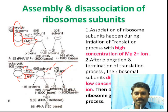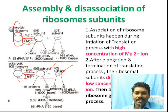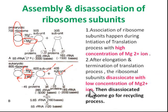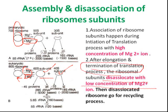Low concentration of Mg2+ leads to dissociation. When protein synthesis reaches termination, the ribosomes dissociate with low concentration of Mg2+. After elongation and termination of the translation process, after dissociation, the ribosomes are ready for recycling.